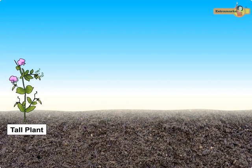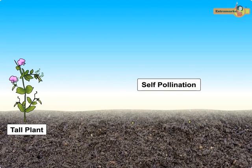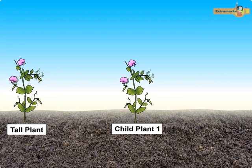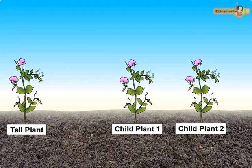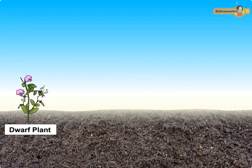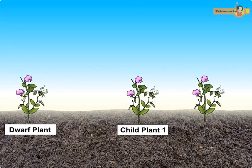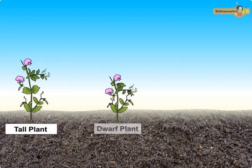Pea plants produce seeds by the process of self-fertilization. Mendel observed that tall pea plants on self-crossing always produced tall plants generation after generation. Similarly, dwarf pea plants on self-crossing always produce dwarf plants generation after generation.